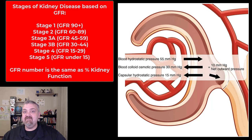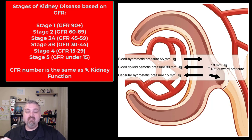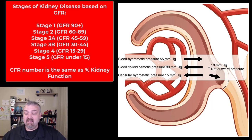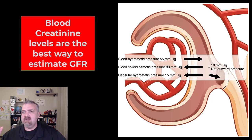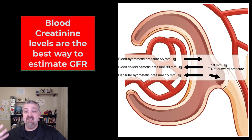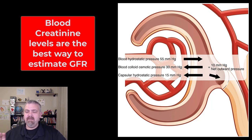Stage 5 kidney failure is a GFR below 15 milliliters per minute. If your kidneys aren't working, you are going to need dialysis. Knowing GFR is very important, especially if you are a pharmacist or doctor working with patients, because poor kidney function is going to impact drug dosages.